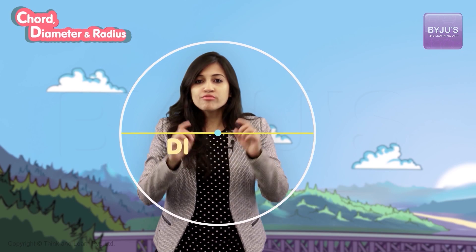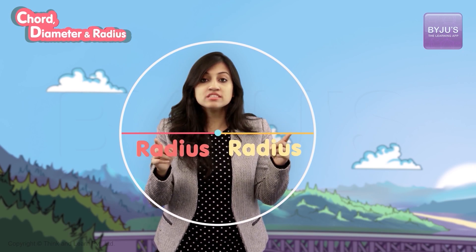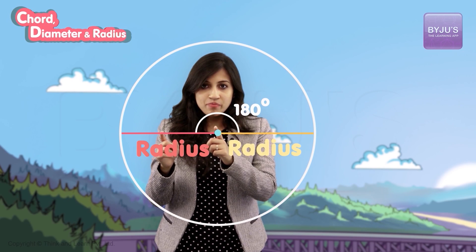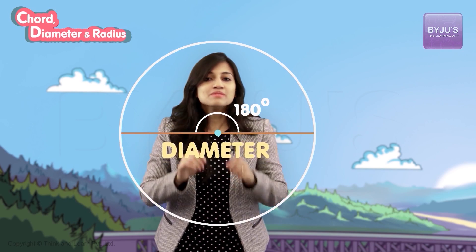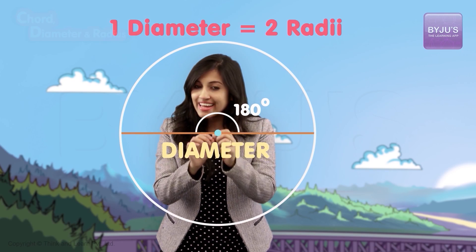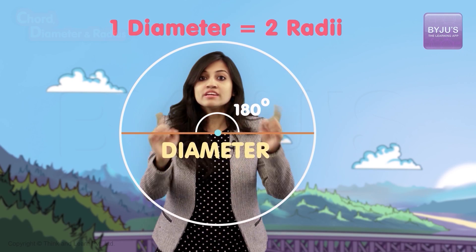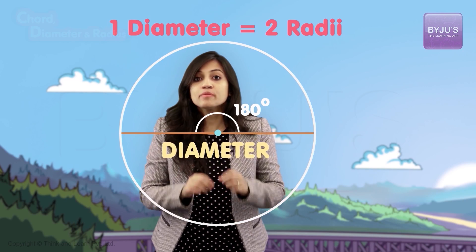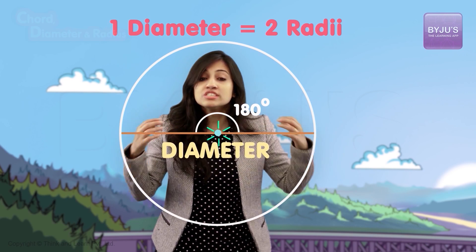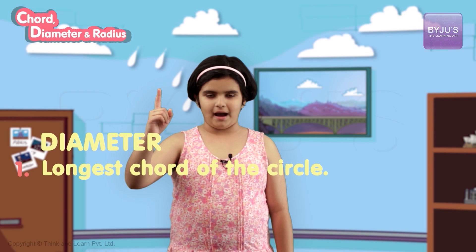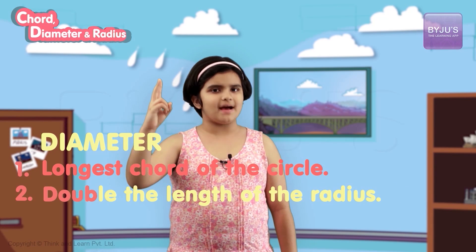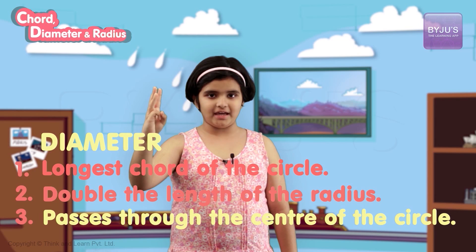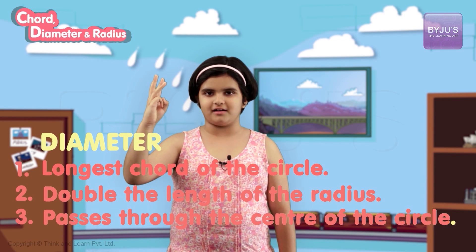This means that if we put two radius lines at 180 degrees, we get the diameter. And this means that the diameter length is double the radius length, and it passes through the center. So: one, diameter is the longest chord; two, it has double the length of the radius; three, it passes through the center of the circle.